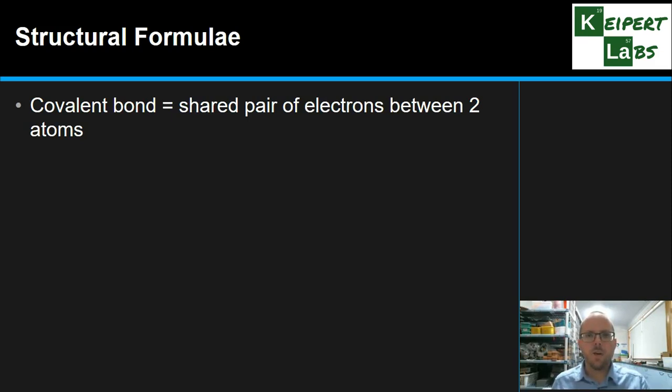Now we said they're covalent molecular compounds. Remember that a covalent bond is a shared pair of electrons between two atoms. It's an overlap of the electron orbitals where these electrons are shared, two electrons are shared between a pair of atoms. And so in this way of doing things, we represent each covalent bond by a straight line. We write the symbols for each atom and then we draw a straight line between them that represents that pair of electrons that's shared.